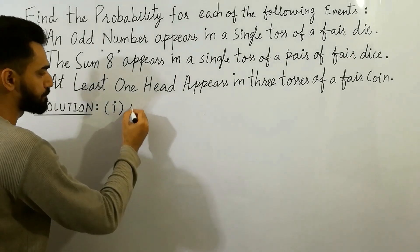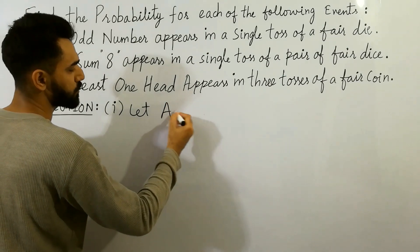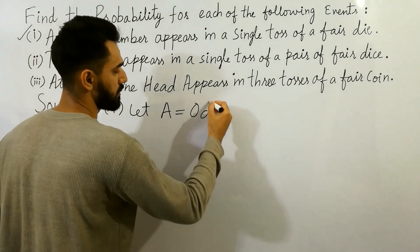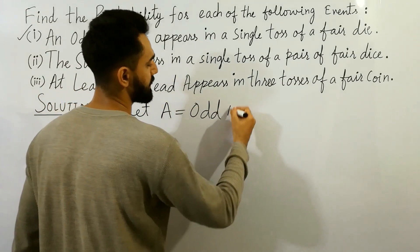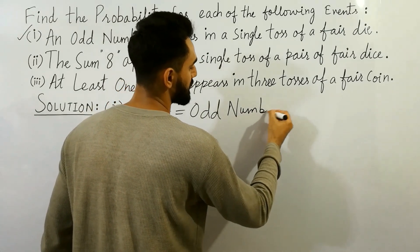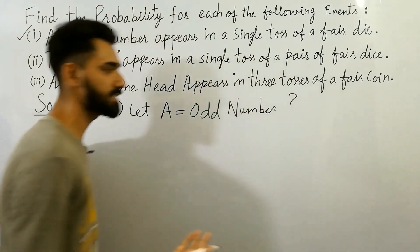Let's suppose that A is equal to odd number. What is that? What is the odd number?